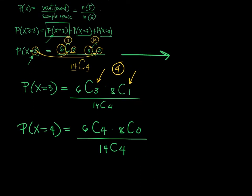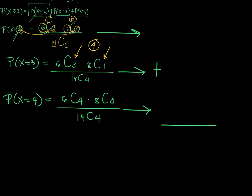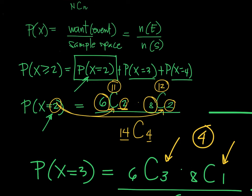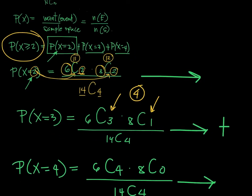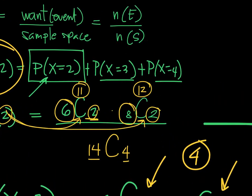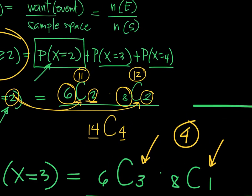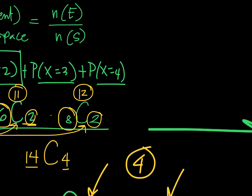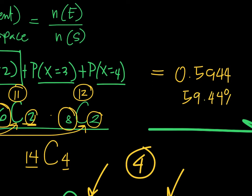What's left is to find the actual value of each probability and add them all together to get the final answer. Using a calculator, the probability that x is greater than or equal to 2 is 0.5944, or 59.44%. That is the probability that there will be at least 2 grade 11 students on the 4-member team joining the contest.